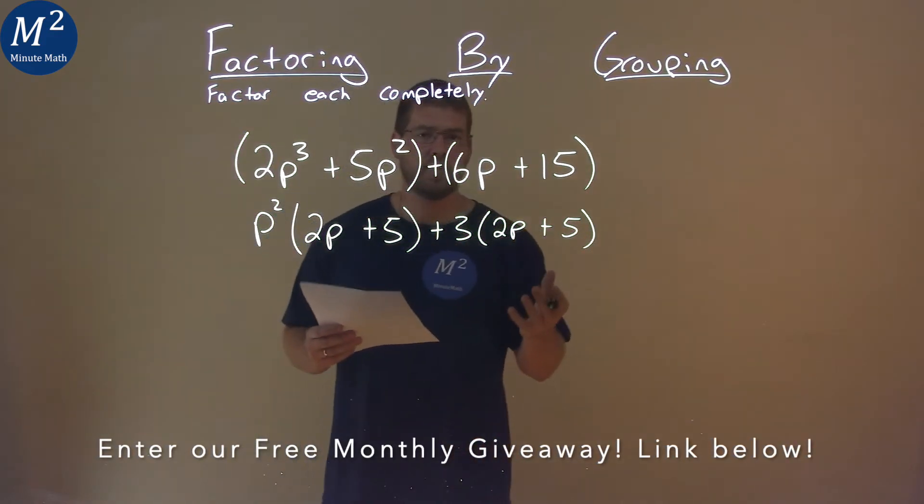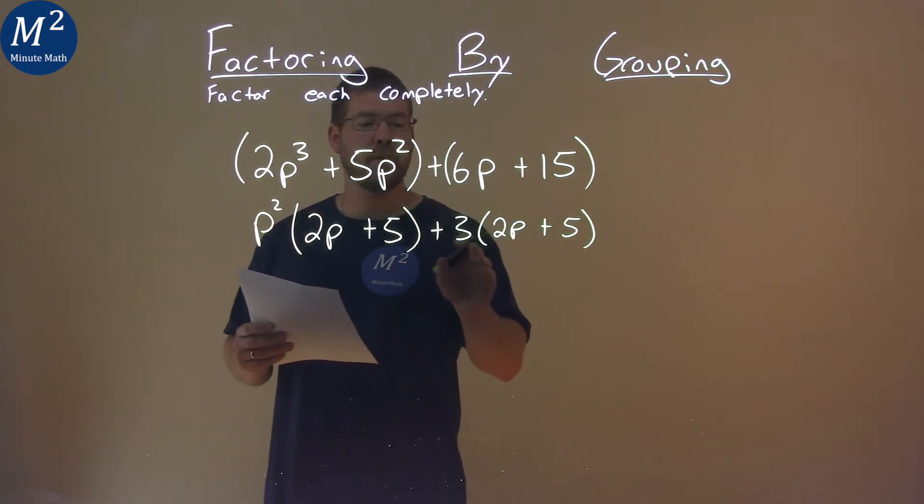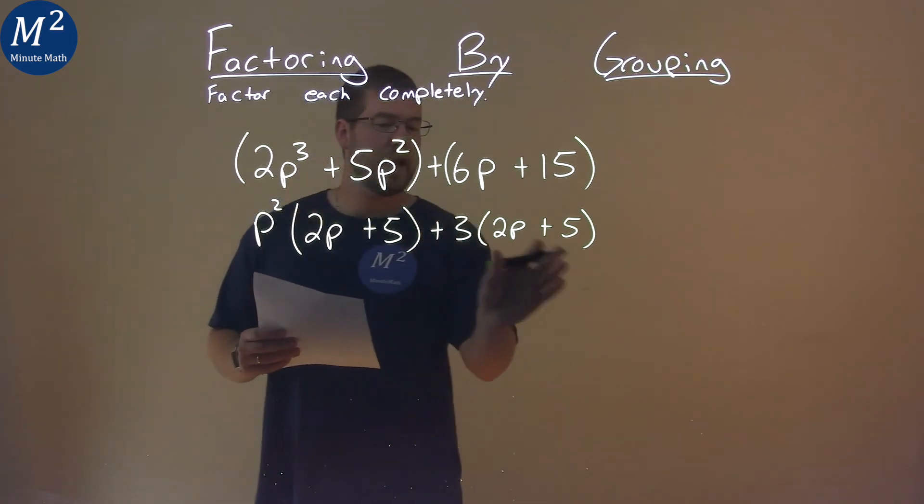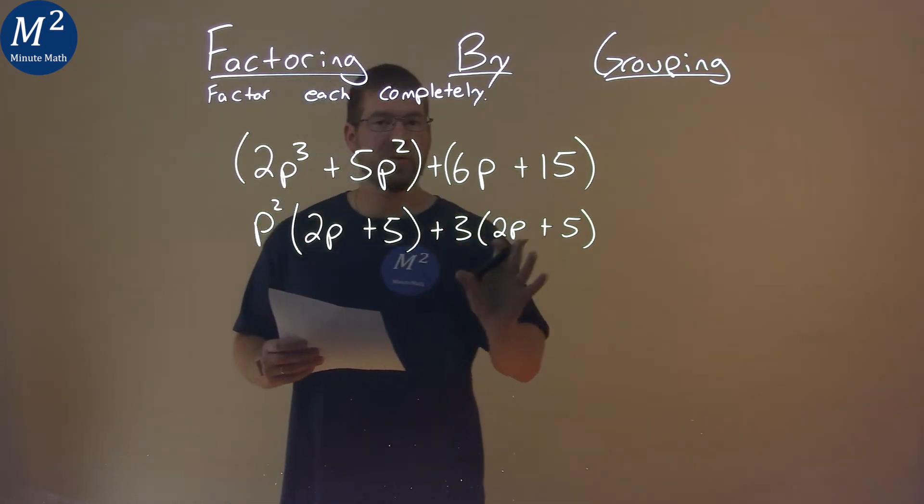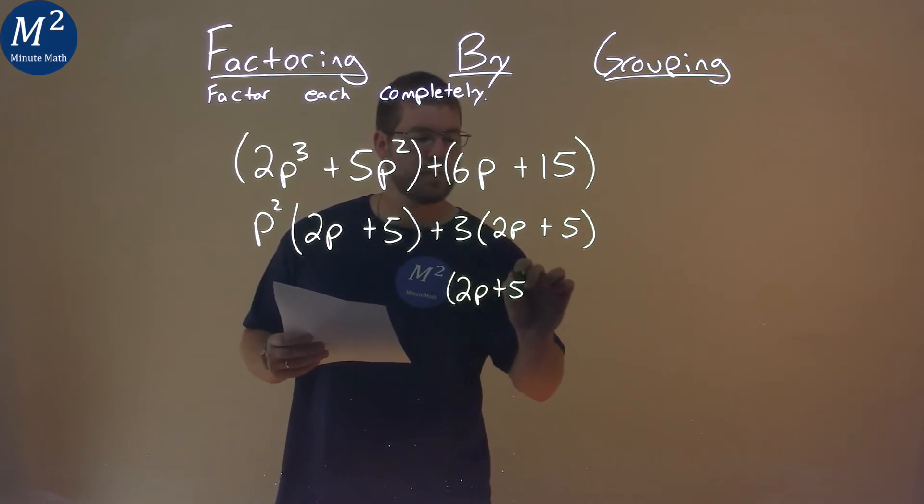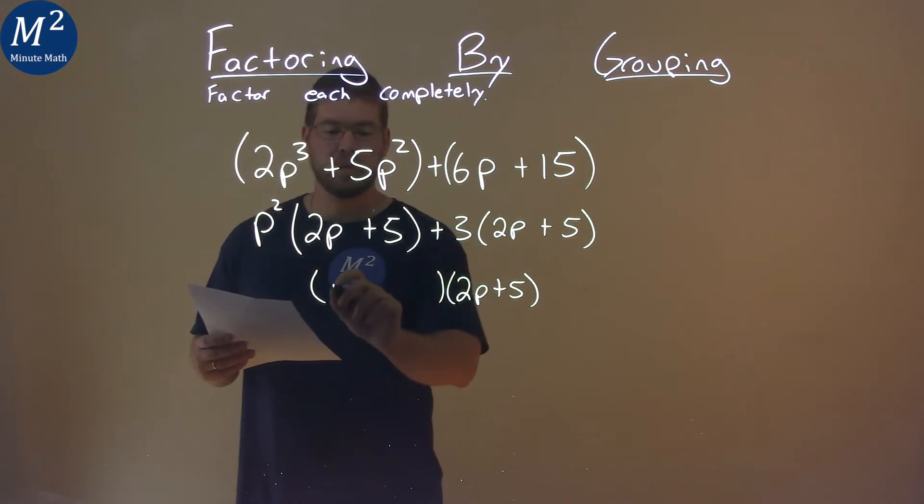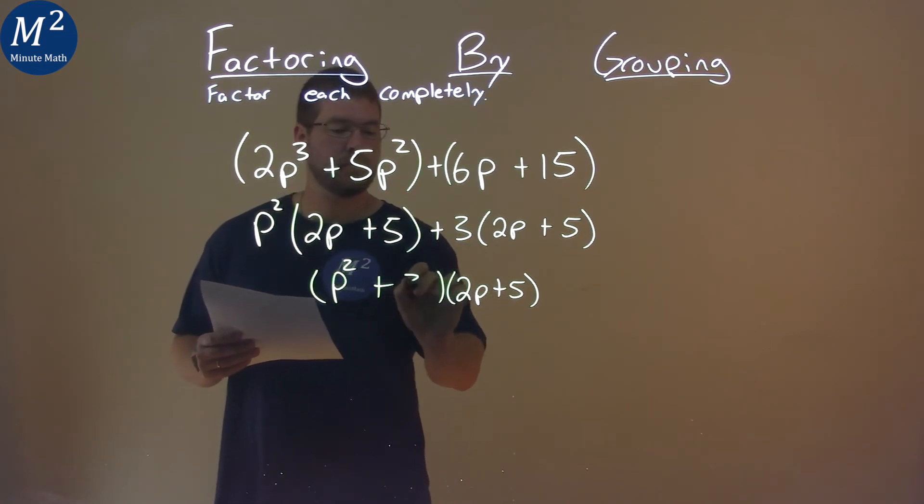Well, what do we notice here? We see a 2p plus 5, and a 2p plus 5. Both are being multiplied by something in front of it. So, we can pull a 2p plus 5 out of the whole expression. So, I'm going to put that here, 2p plus 5. Pull that out, and then we're going to be multiplied by the leftover parts, p squared plus 3.